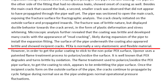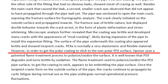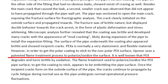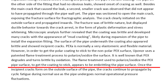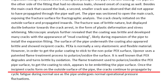The surface of the pipe underneath the coating also appeared brittle and showed incipient cracks. PEX-A pipe is normally a very elastomeric and flexible material; however, in order to get the polar coating to stick to the non-polar PEX surface, Uponor uses a patented flame treatment process to polarize and oxidize the surface. It is well known that PEX degrades and turns brittle by oxidation. The flame treatment used to polarize and oxidize the PEX-A pipe surface to get the coating to stick appears to have embrittled the pipe surface.